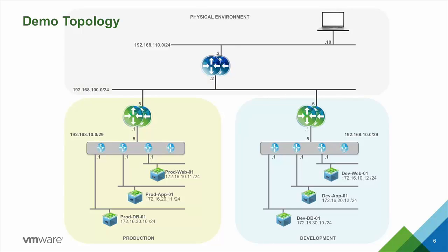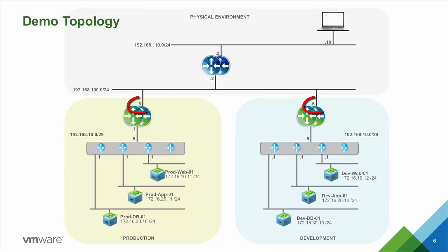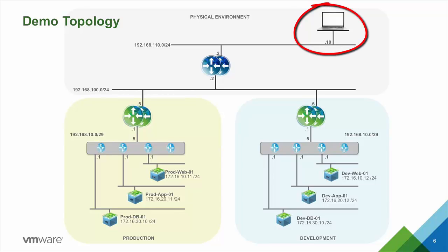On the physical side of the topology we have a physical router, the blue one, that connects to both NSX Edges. If you look at the uplink on both NSX Edges, you can see that they use different external IP addresses. On the top right there is also a laptop that we will use for some of the demos.